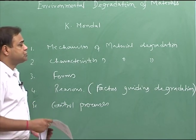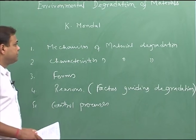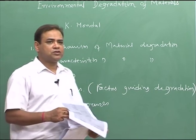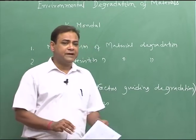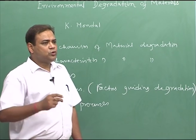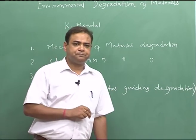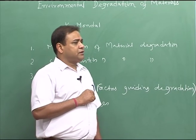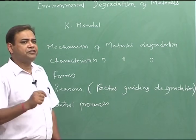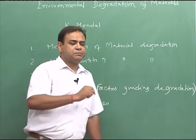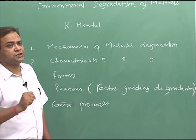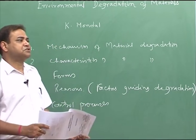Before we go further into degradation, let us see what things will be covered in this particular course. Mainly the corrosion and oxidation of metals and alloys — those are examples of material degradation and those parts will be covered in detail. Other things by which degradation can happen, such as wear or radiation, we will touch on briefly, but the main consideration in this course would be corrosion and oxidation of metals and alloys, and the prevention mechanism.